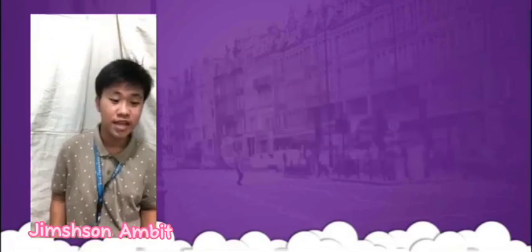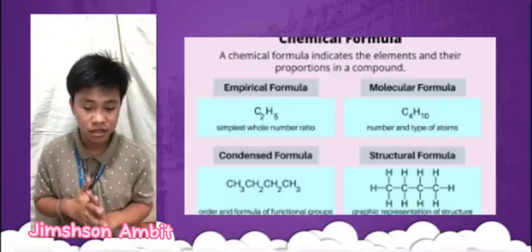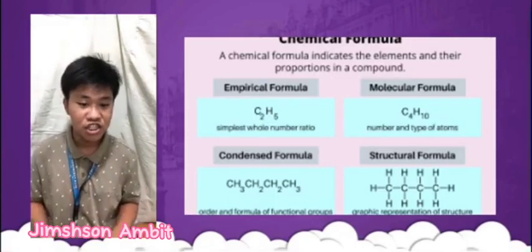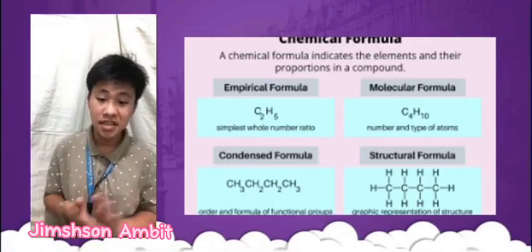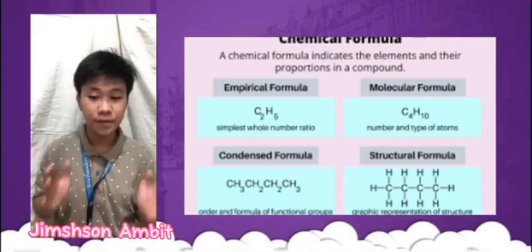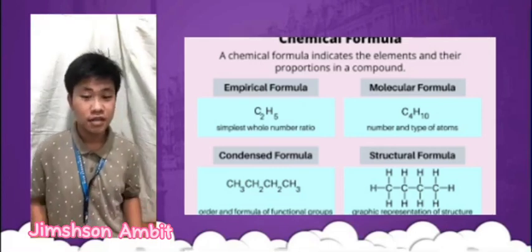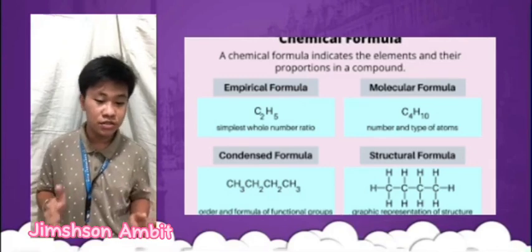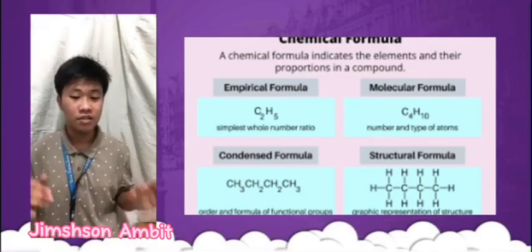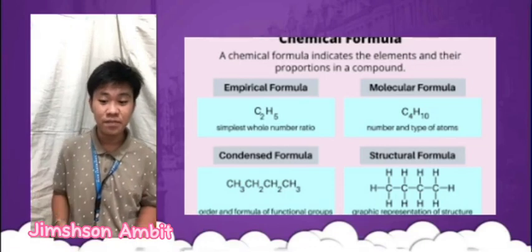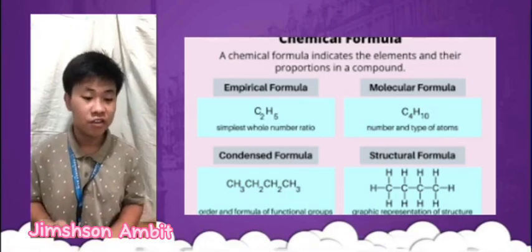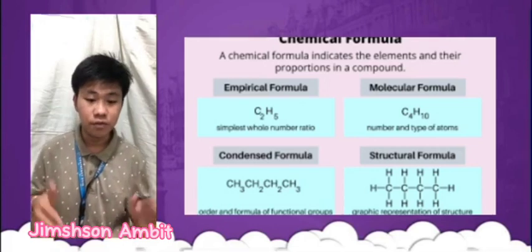Let's start with the empirical formula. An empirical formula shows the simplest whole number ratio of the atoms in a compound. It is the most reduced formula of a compound and does not necessarily represent the actual number of atoms of each element in the compound.